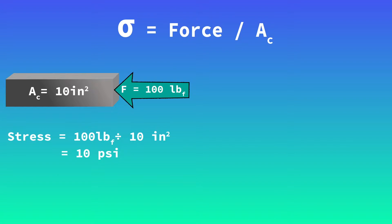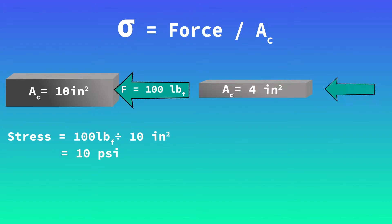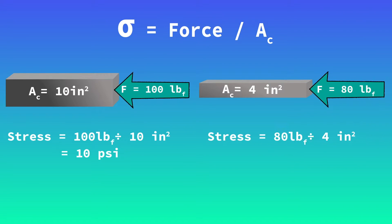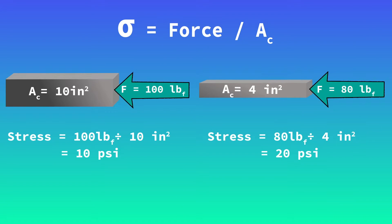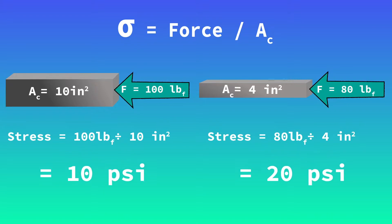Stress varies directly with the applied load and indirectly with the cross-sectional area. To illustrate this, another beam with a cross-sectional area of 4 inches squared and an applied load of 80 pounds shows that the experienced stress is 20 psi.